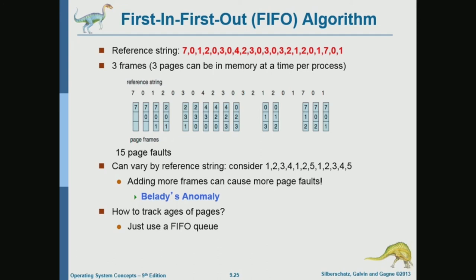After replacing 7, we access page 0 — it's already in physical memory, so no page fault. Then the program accesses page 3, which is not in physical memory and all frames are used. The replacement is first-in, so among the current pages the first-in was 0. So 3 replaces 0, and so forth.